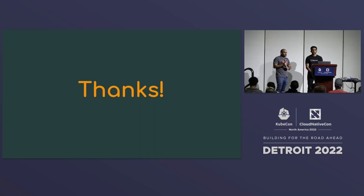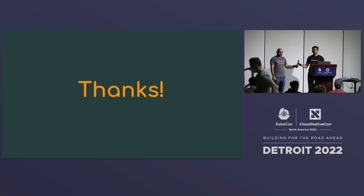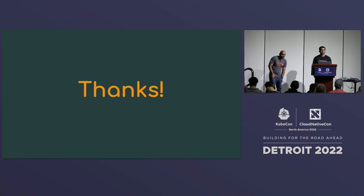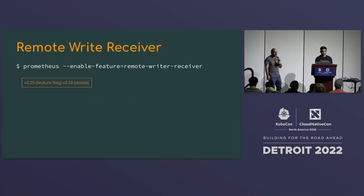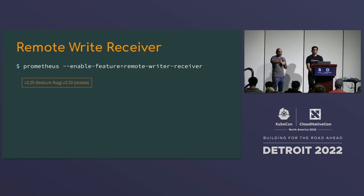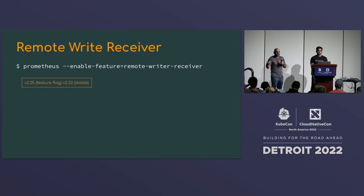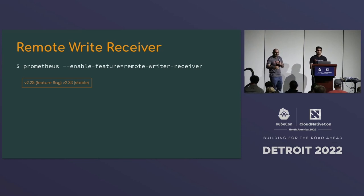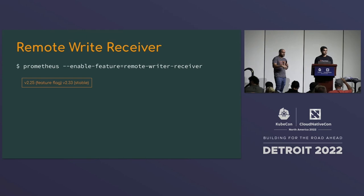Q: You mentioned scraping as the way to get data into the TSDB — what about OpenTelemetry (OTLP)? A: You can use remote write receiver to push data in. You can also use the OpenTelemetry Collector to receive OTLP and remote-write into Prometheus, converting OTLP to Prometheus format — it maps really well. There's also an ongoing proposal to add native OTLP ingestion to Prometheus; it will be discussed at an upcoming dev summit.